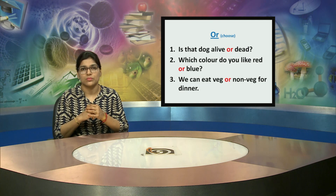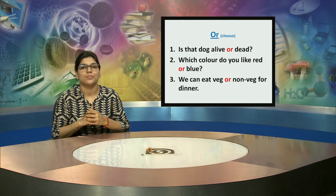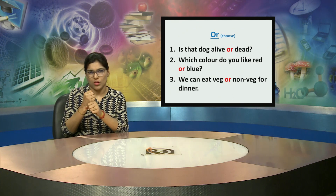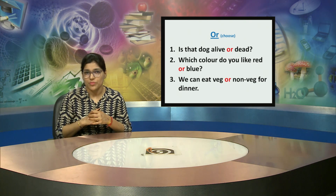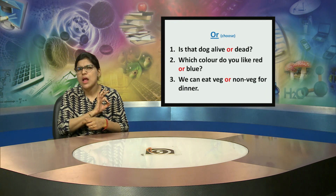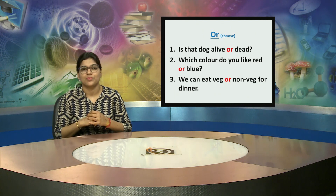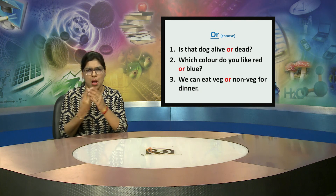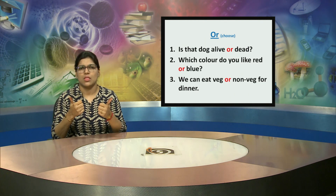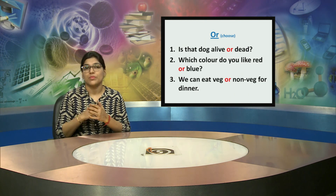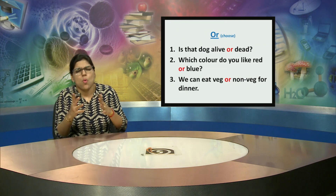Next is 'or,' in which there is a choice between two things. First sentence: Is that dog alive or dead? Second sentence: Which colour do you like — red or blue? Third sentence: We cannot eat veg or non-veg for dinner. When there is an 'or,' there is a choice between two things. Thanks.